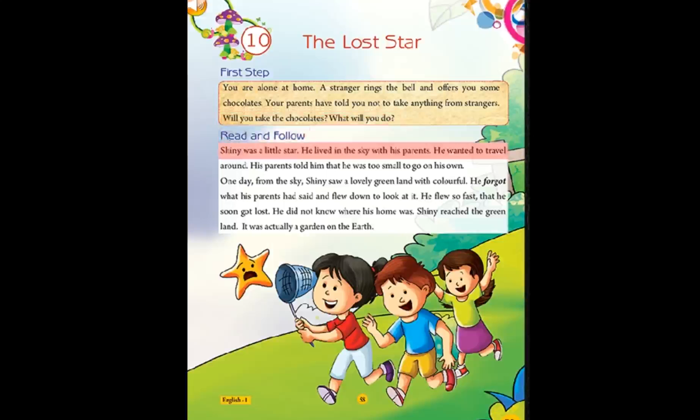Shiny was a little star. He lived in the sky with his parents. He wanted to travel around. His parents told him that he was too small to go on his own.